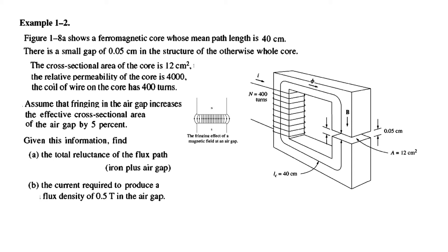Given this information, find the total reluctance of the flux path. We also need to find the current required to produce a flux density of 0.5 tesla in the air gap.